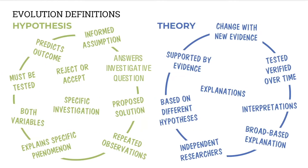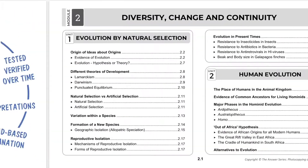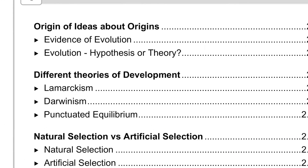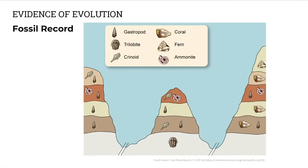We can also look later, in future videos, at differences between definitions — for example, hypothesis and theory. Then we'll look at evidence of evolution. What evidence is there for evolution? We'll be looking at six different evidences. Number one: the fossil record. Only some organisms become fossilized, so it's an incomplete record, but that is our number one evidence.